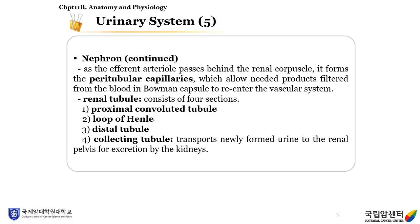As the efferent arteriole passes behind the renal corpuscle, it forms the peritubular capillaries, which allow needed products filtered from the blood in Bowman's capsule to re-enter the vascular system. The renal tubule consists of four sections: proximal convoluted tubule, loop of Henle, distal tubule, and collecting tubule.